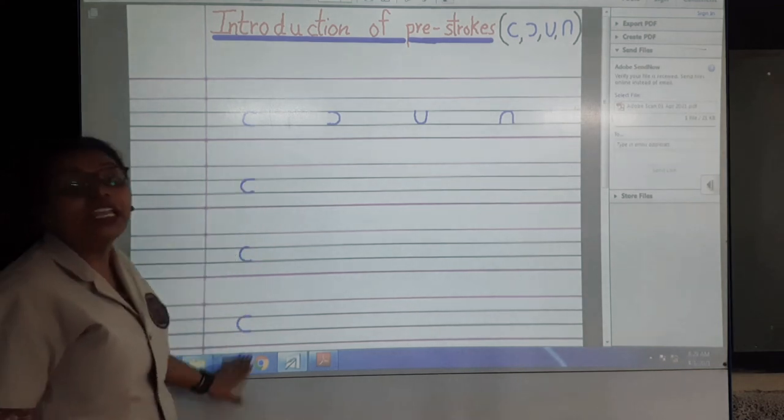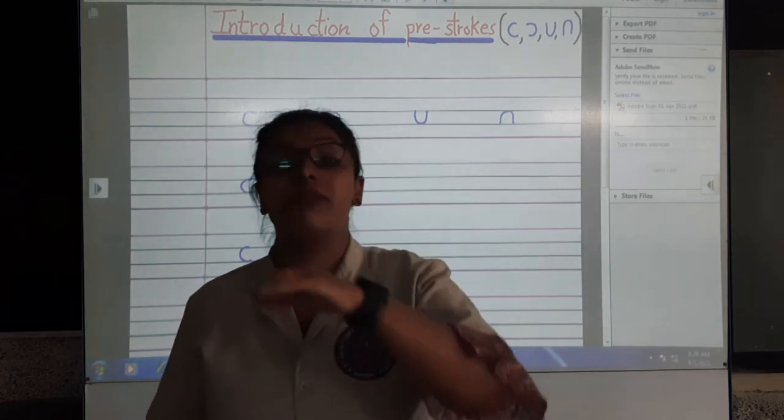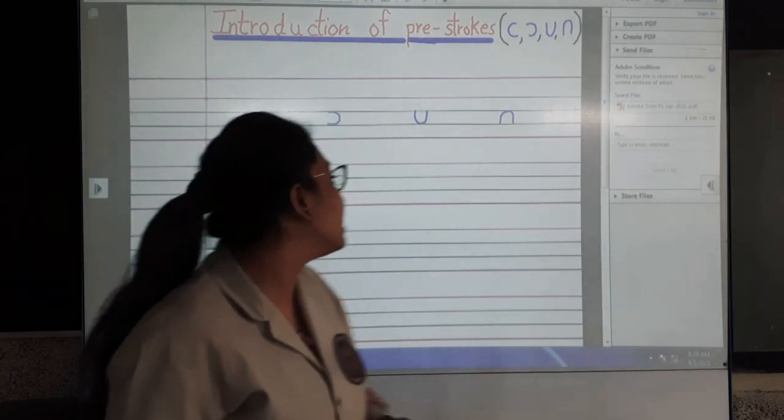This is how you have made C curve. Now what do we do? Inverse C curve, opposite C curve. How do we do?